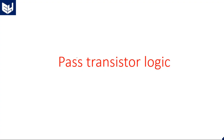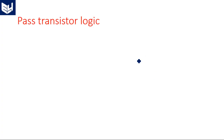In this video I am going to explain pass transistor logic. In the previous videos we have seen transmission gate, which consists of a parallel connection of PMOS and NMOS. The advantage of transmission gate was it gives 100% output voltage swing, because the positive threshold voltage of the PMOS and the negative threshold voltage of the NMOS cancel each other when they are equal.